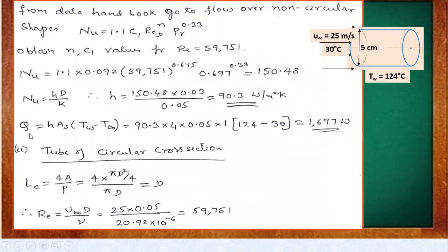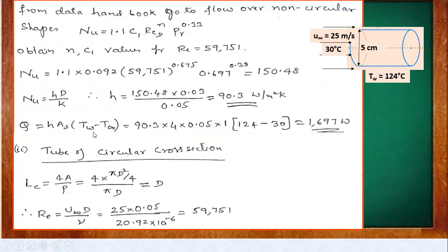Once h is obtained, find the rate of heat transfer: Q = h × A × (Tw − T∞). The surface area of the square tube is 4 × 0.05 × L (perimeter × length), with L = 1 m. Substituting gives Q = 1697 W for the square tube case.